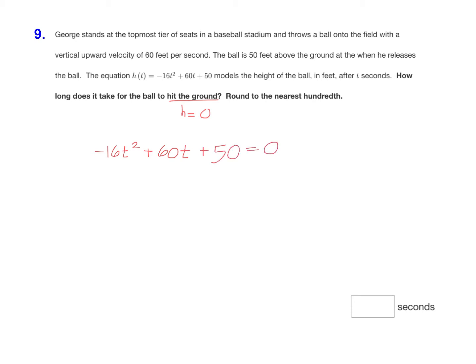So we'll need to solve -16t² + 60t + 50 = 0. And we can solve that using the quadratic formula. We'll begin by labeling a, b, and c. Here, a is -16, b is 60, and c is 50.